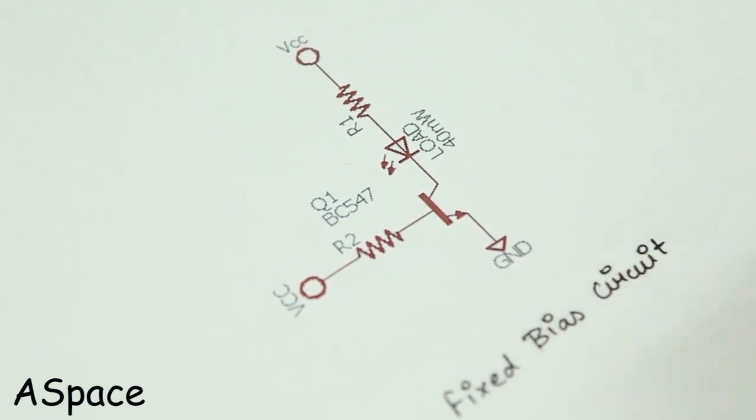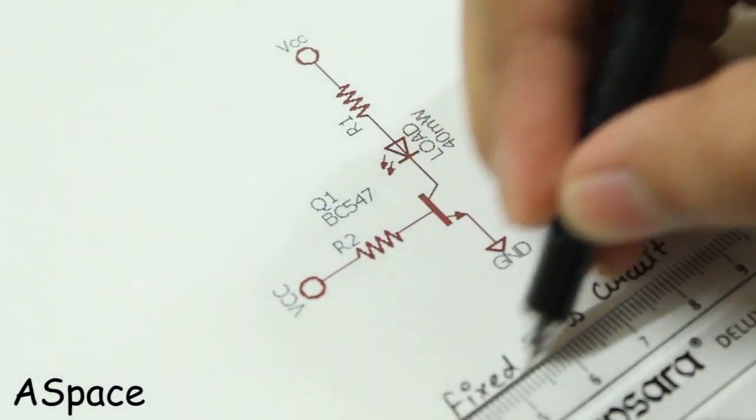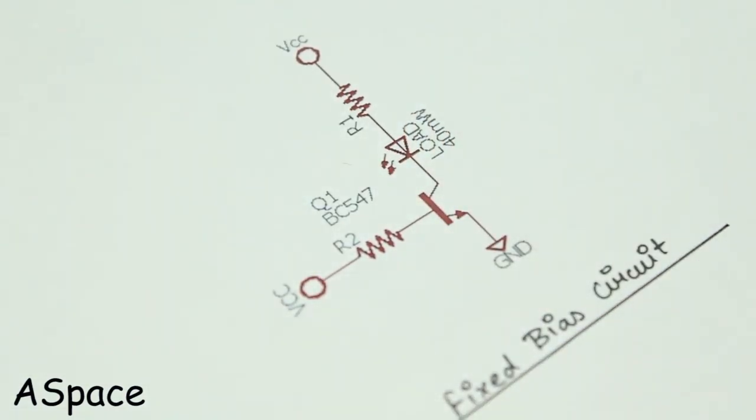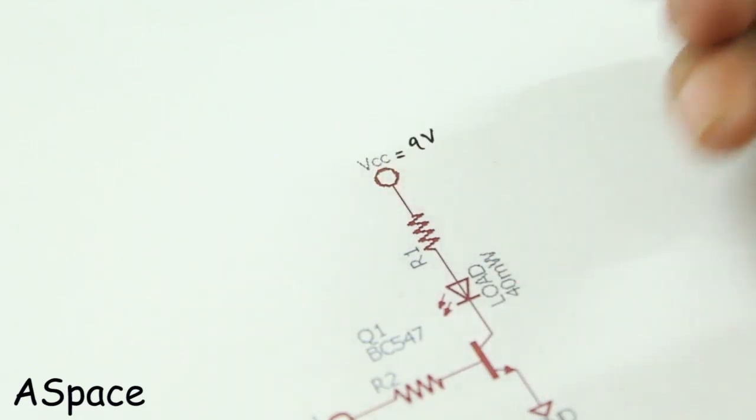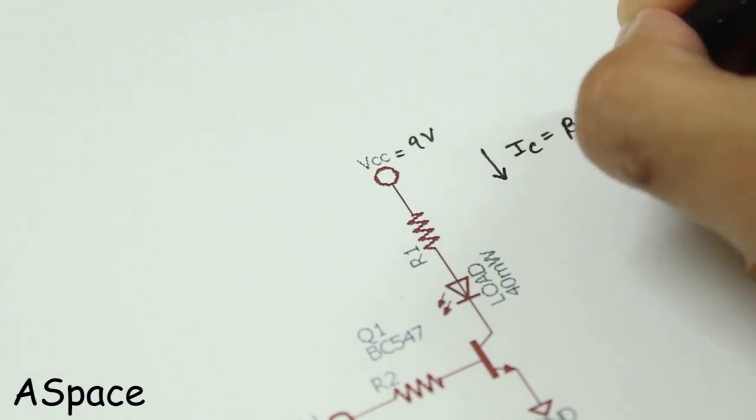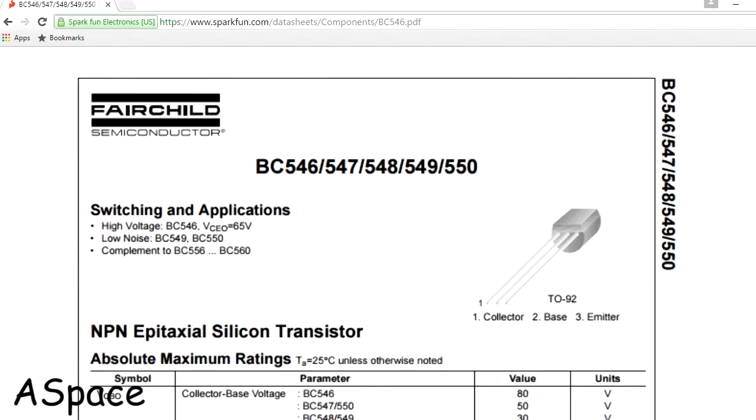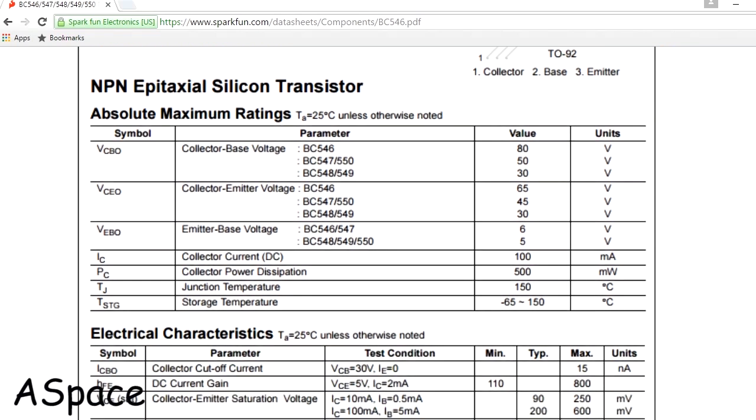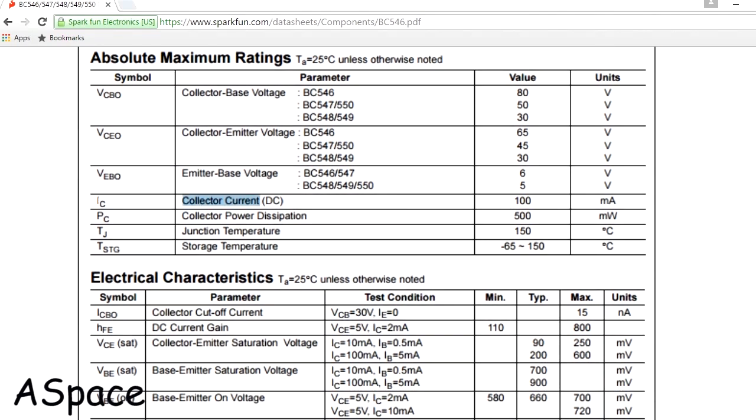For the LED to glow in this circuit, a minimum base current is required, which acts as a switch. BJTs are also known as current control devices. Higher base current can destroy the transistor, so we need to add a current limiting resistor. We need to make sure that the collector current does not exceed the rated value.